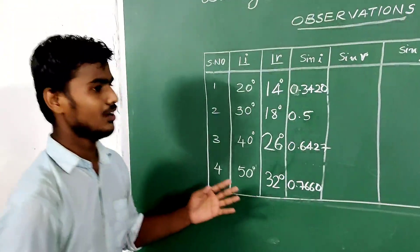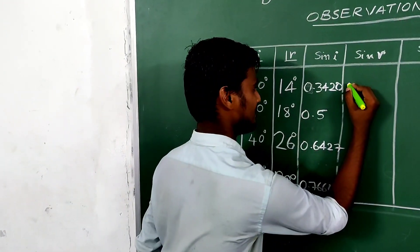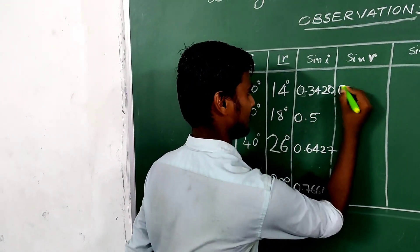Then we calculated the sin r values. The sin r value for 20 degrees is 0.2419.